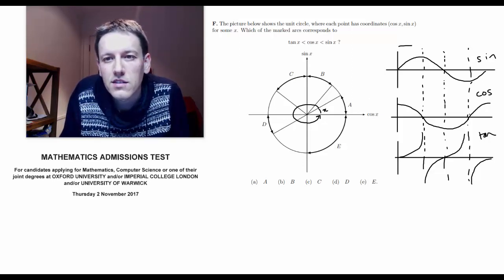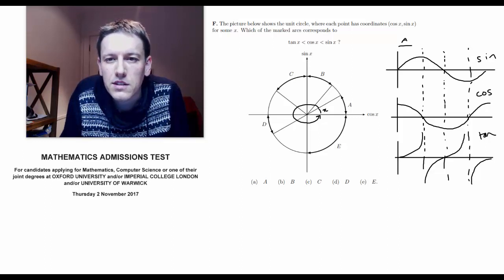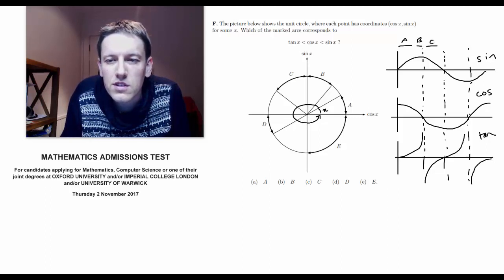So a is something like these ones. B is going to be coming up to 90 degrees, so some values here. C is going to be from 90 degrees onwards to some point. D is going to be the first part of this section and e is all of this section.